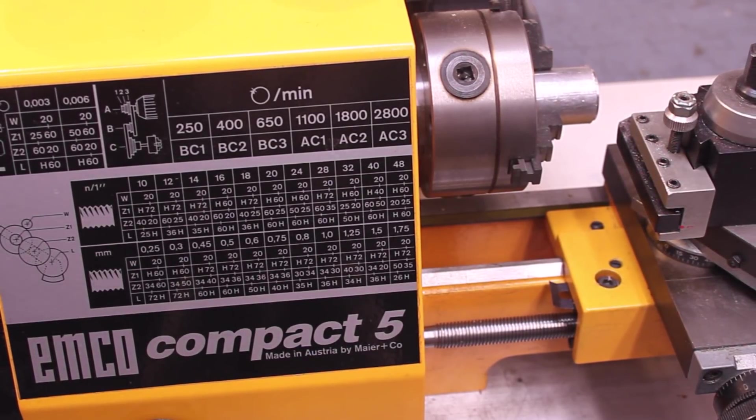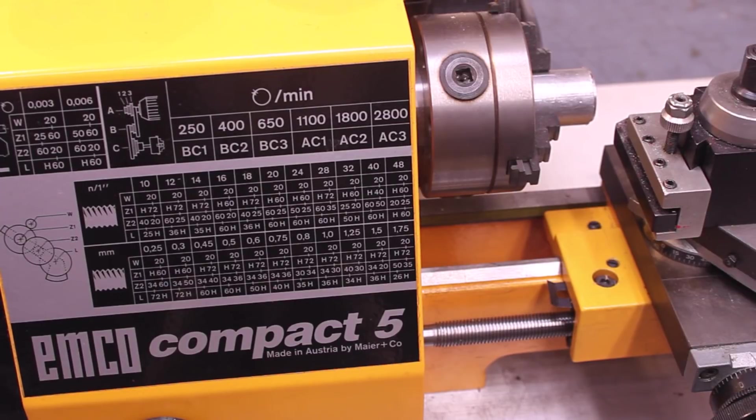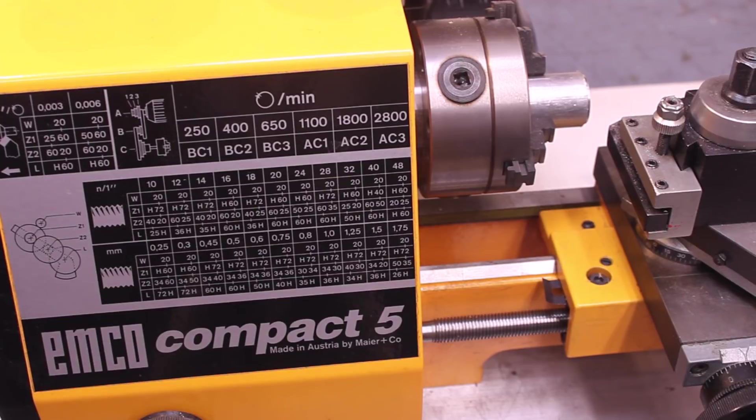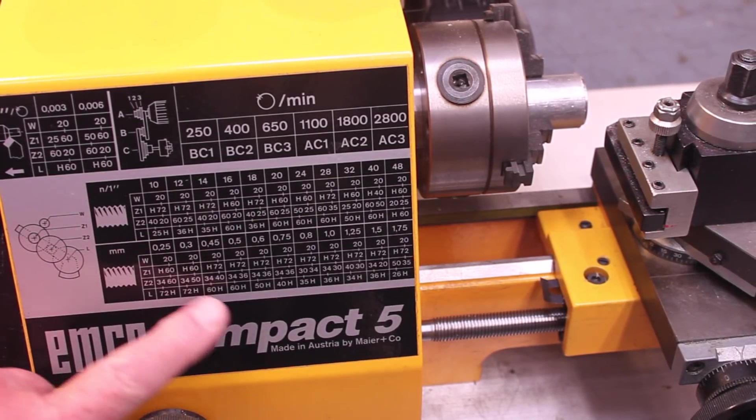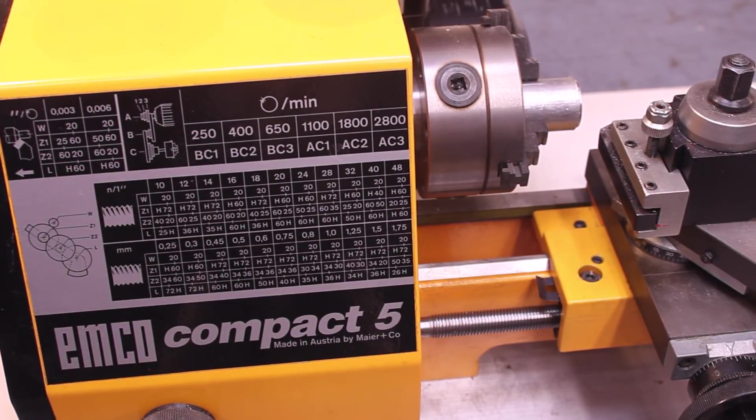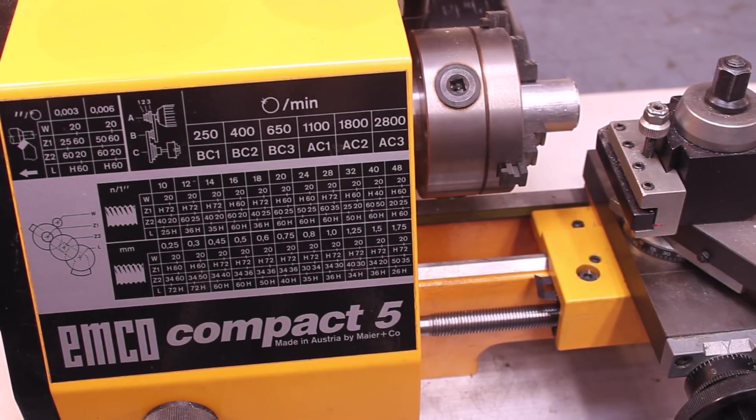Works perfectly in the United States and you can see all the different thread pitches that can be cut with this thing using a set of change gears. It does include a good number of metric threads as well and here are the speeds 250 up to about 2800 rpm.